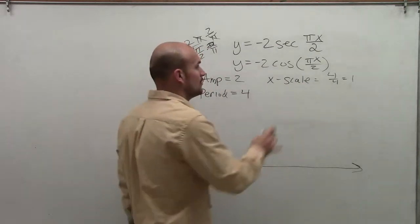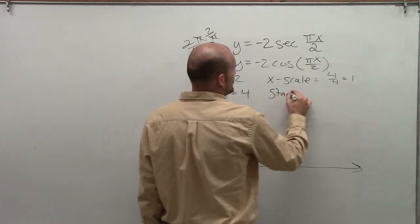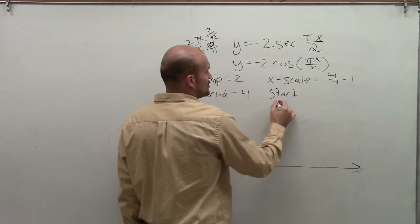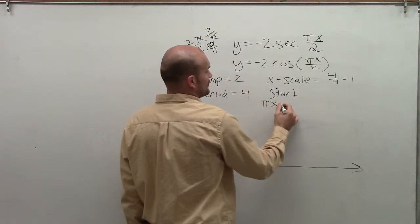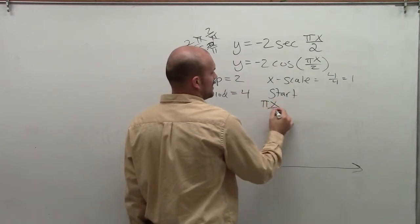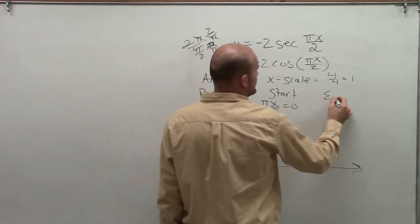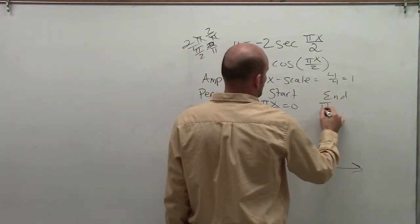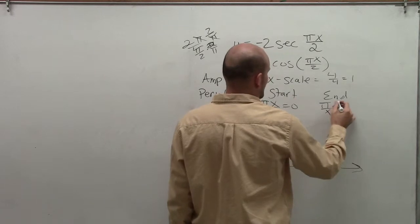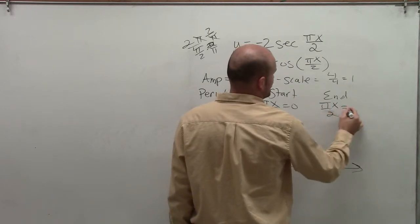Then I want to look at my new start point. So my start, remember, is you're going to take whatever's inside your function, which is pi x divided by 2 equals 0. And then your ending point, which will be pi x divided by 2 equals 2 pi.